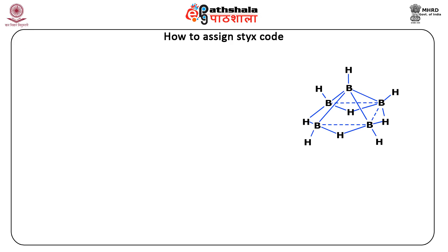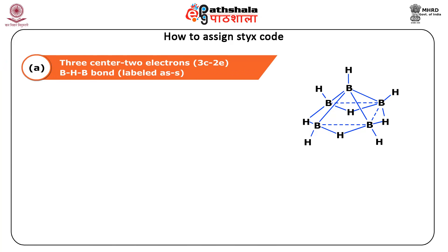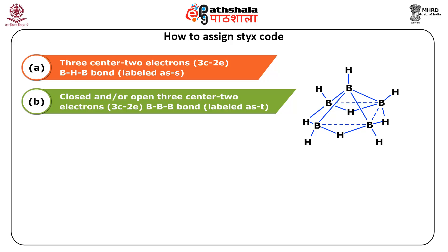Now let us know how to assign the STYX code. Lipscomb proposed that the three-center, two-electron boron-hydrogen-boron bond can be labeled as S. The closed and/or open three-center, two-electron boron-boron-boron bond can be labeled as T.